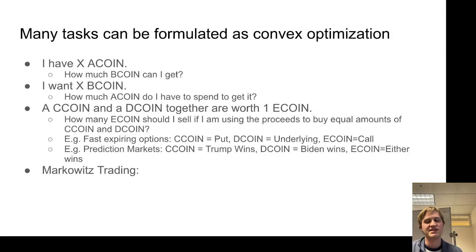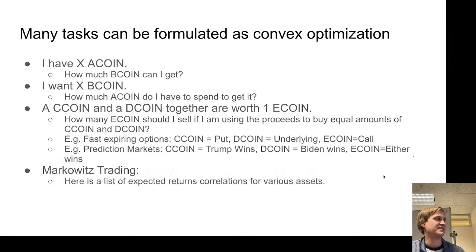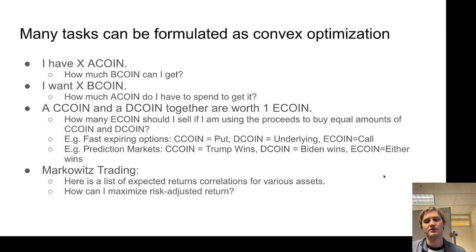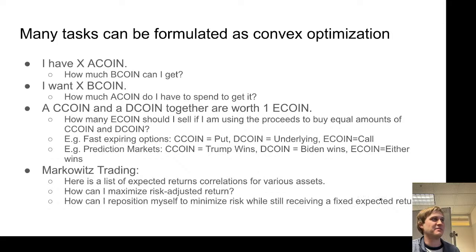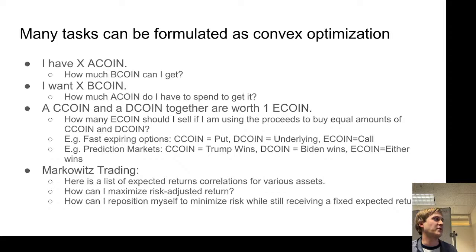Here's another example from the paper: Markowitz trading. This is the premier form of portfolio management from the sixties and seventies. The idea is that if you know the correlations of returns for all the assets you're willing to trade on, then maximizing your risk-adjusted returns is itself a convex optimization problem. There's a lot of math involving multiplying by covariance matrices, but it turns out to be yet another example of a convex optimization problem. You could think of it as repositioning yourself to minimize risk while still getting a certain expected return.